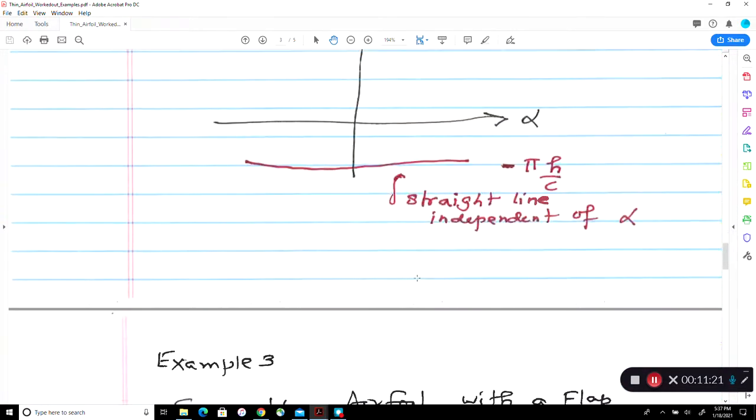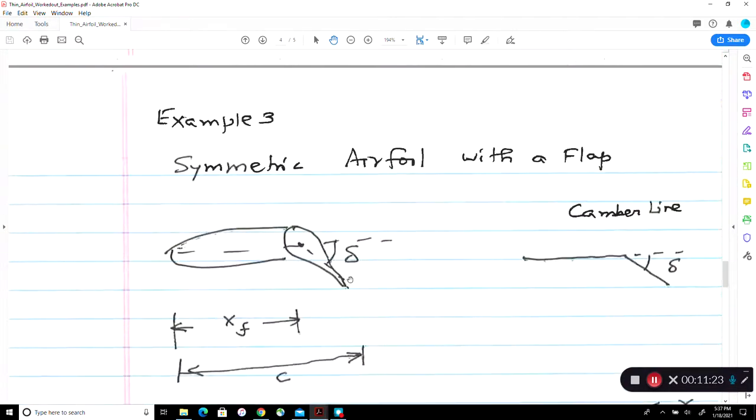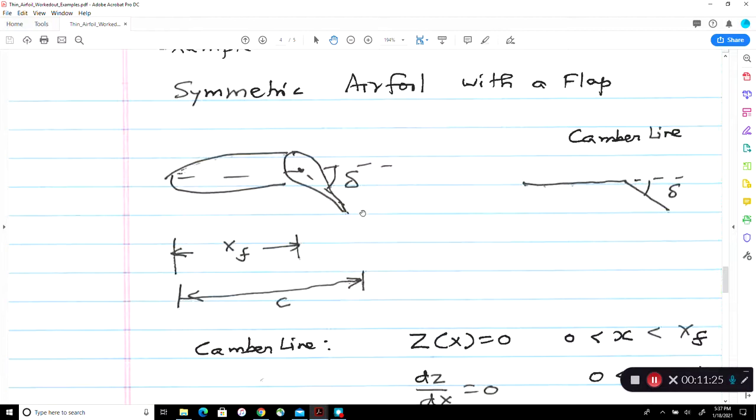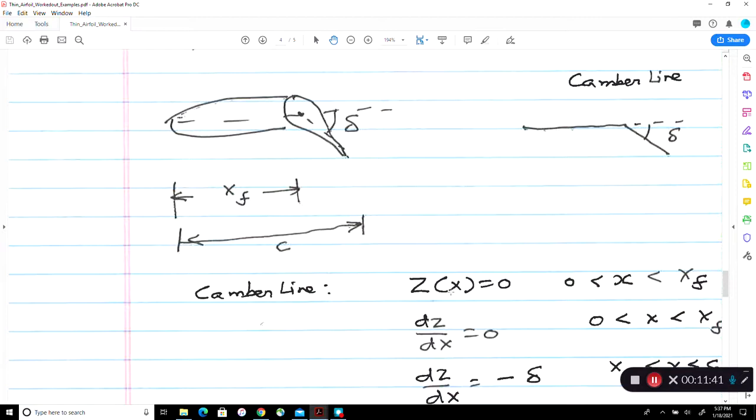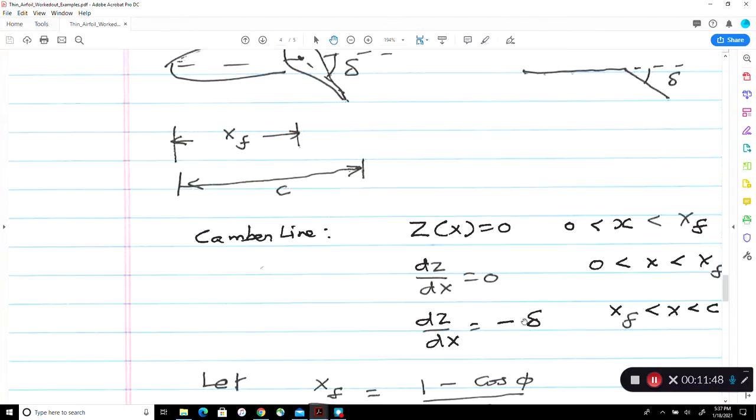Now let's look at one last example. This is a symmetric aerofoil with a flap. So if you look at just the chord line, this is symmetric. This is symmetric except this part has deflected back by delta. So let's say this hinge point is x of flap. That's the hinge point. So the camber line is dz over dx is zero up to the x flap. Downstream of the x flap, the slope is negative number equal to minus delta, where delta is in radians.